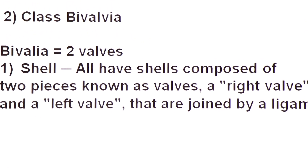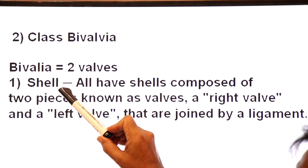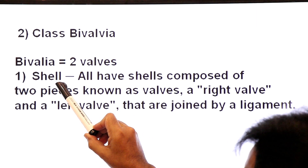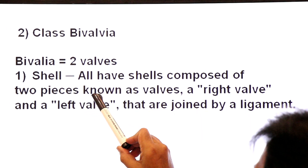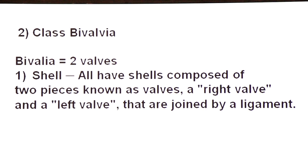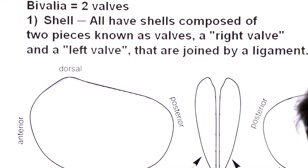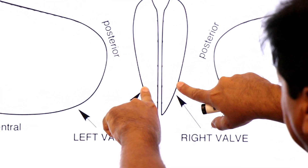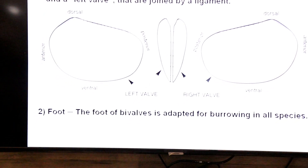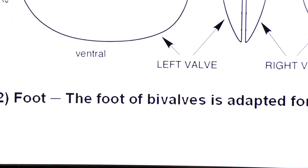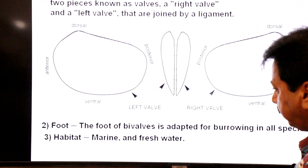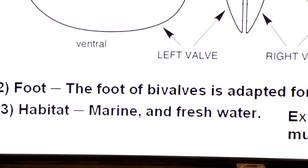Class Bivalvia — they are named bivalvia due to the presence of two valves. All members have shells composed of two pieces known as valves — a right valve and a left valve — joined by a ligament. The foot of bivalves is adapted for burrowing in all species. Their habitat includes marine and freshwater forms. Examples of class Bivalvia include mussels and oysters.